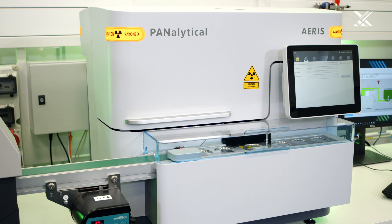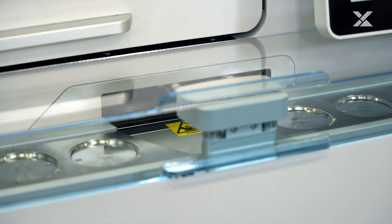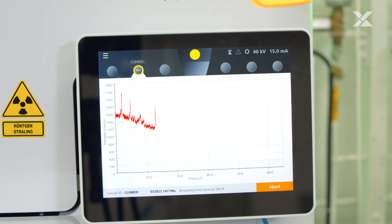The Eris performs phase identification and quantification to assess the mineralogical composition of raw materials, clinker, additives and cement, contributing to sustainable and efficient cement production.